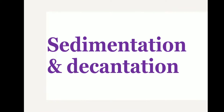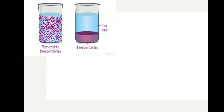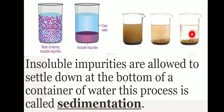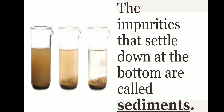Let us learn about sedimentation and decantation. We can see here insoluble impurities — they are allowed to settle down at the bottom of a container of water, and this process is known as sedimentation. We can see here the clay mixed with water settling down; after leaving it for some time, the insoluble impurities settle at the bottom. The impurities that settle down at the bottom are called sediments.